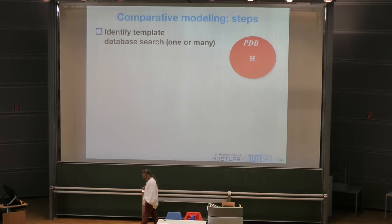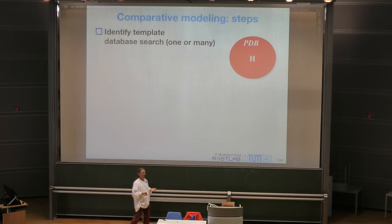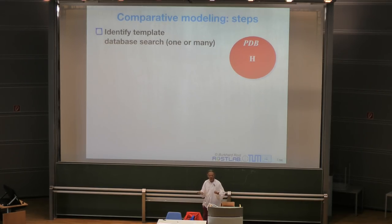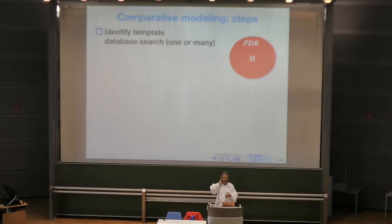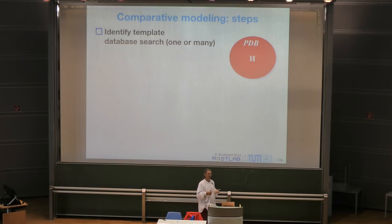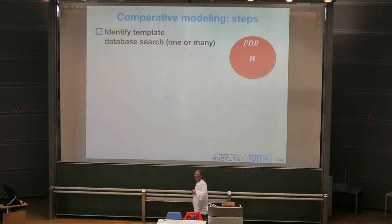The first idea starts from the observation that proteins with similar sequences have similar structures. If I take one protein — we call it the target or the query — and for this query protein, you want to predict the structure. You suspect that the PDB database of three-dimensional structures has one protein that is similar to your query. This is the so-called template, called H, that we will use to predict the structure.